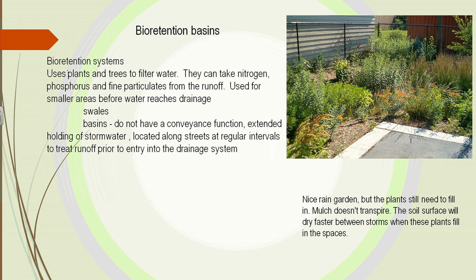We have bioretention basins, where plants and trees are used to filter the water. They take up nitrogen, phosphorus, and fine particulates from runoff. Here's a small rain garden in its early stage — it has mulch on it. As rain comes into this area, it's absorbed into the earth, and the plants remove some of the pollutants.